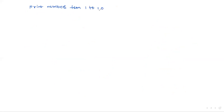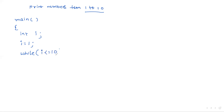Now I will show you a simple example: print numbers from 1 to 10. Inside main, we declare int i. The first step is initialization: i = 1. The while condition is i less than or equal to 10. Inside the body, we write printf with %d and i, then i++.